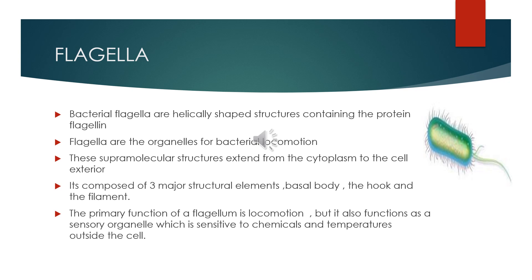Bacterial flagella are helically shaped structures containing the protein flagellin. Flagella are the organelles for bacterial locomotion — they help the bacteria to move. These supramolecular structures extend from the cytoplasm to the cell exterior and are composed of three major structural elements.